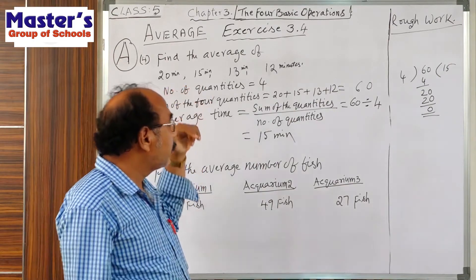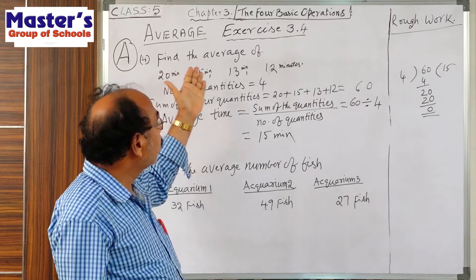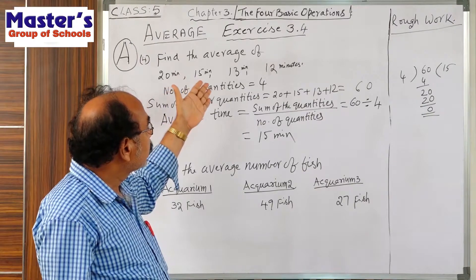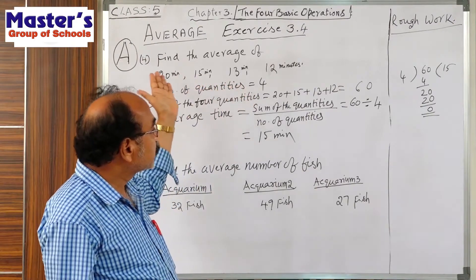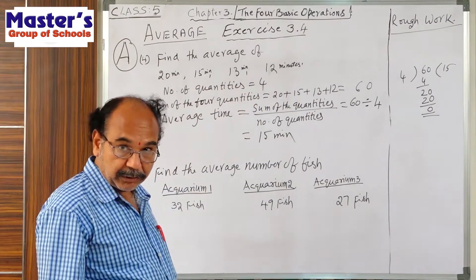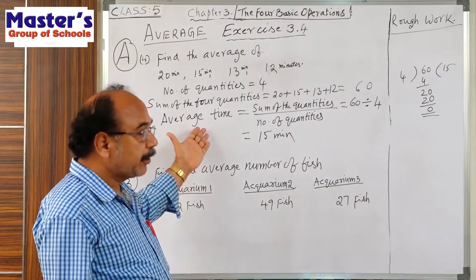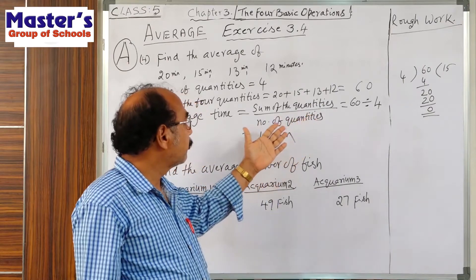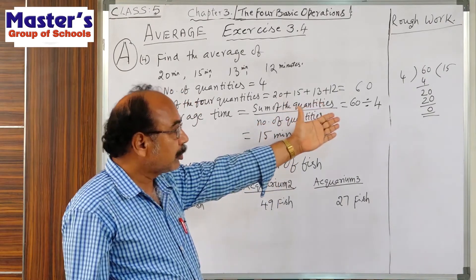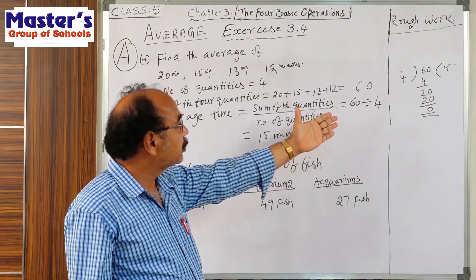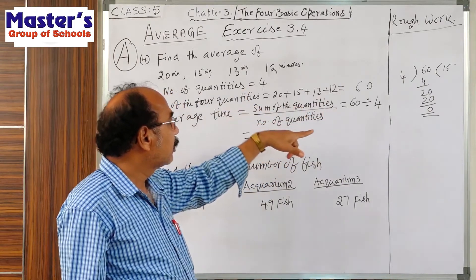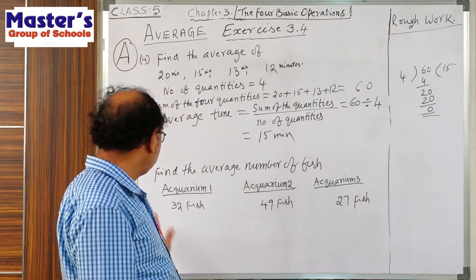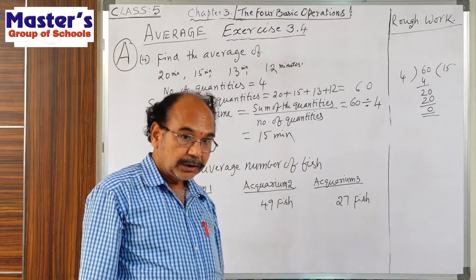So in this problem, four quantities were given and they are mixed values. That's why the four numbers were added to get 60 minutes. And according to the formula — average equals sum of the quantities divided by number of quantities — the total 60 is divided by 4, and we get 15.